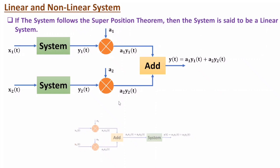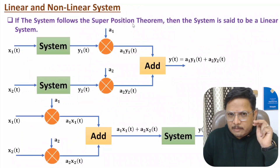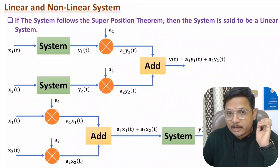Here we have signals x1(t) and x2(t). Multiplying by constants a1 and a2, then adding them gives the input a1·x1(t) + a2·x2(t). If the given system produces output y(t) = a1·y1(t) + a2·y2(t), which is similar to the earlier output, then one can say this system follows the superposition theorem and is therefore a linear system.